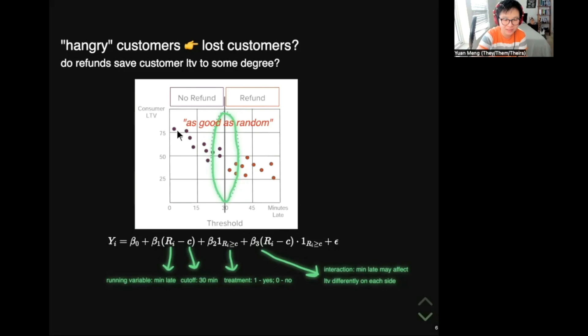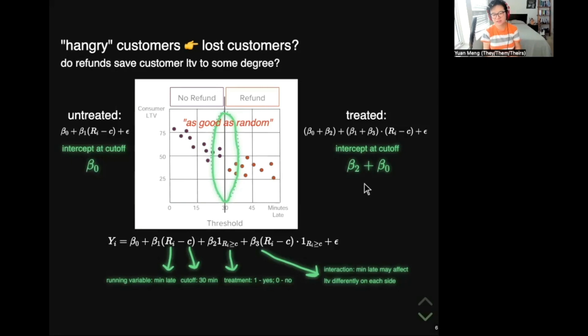What is the main focus for today? We want to find the treatment effect of getting a refund. So imagine we're fitting lines to both sides of the data points. If we plug in zero for the indicator function, we get a formula for the untreated customers. If we insert the cutoff for the running variable, then we'll see that this line intersects at the cutoff at beta zero. Similarly, we can plug in one for the indicator function and get the formula for the treated side. This line intersects with the cutoff at beta two plus beta zero. The treatment effect lies in the difference between the two intercepts. In this case, it is beta two. So the treatment effect is the coefficient of the indicator function, or I understand it as the treatment status.